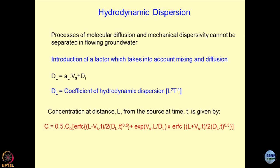The governing equation for hydrodynamic dispersion is: DL = Al × Vs + Di, where Di is the diffusion coefficient in the free state. DL is the coefficient of hydrodynamic dispersion, with units of L²/T. If you solve this equation, you get Ct/C0 as error functions with exponential terms, which allows you to find the concentration of contaminants at a given time and distance.